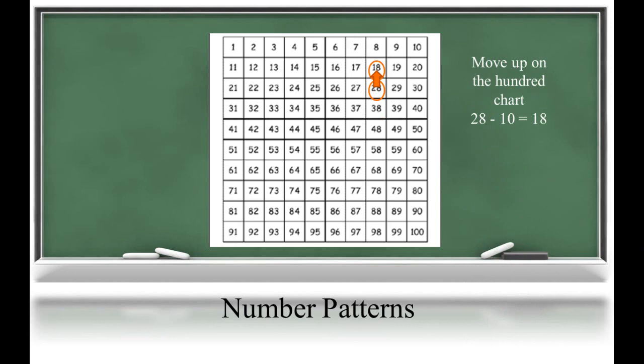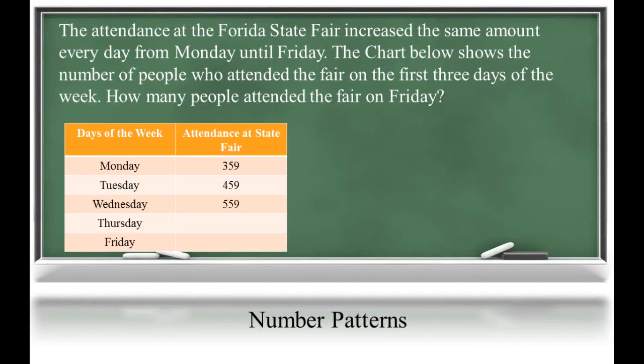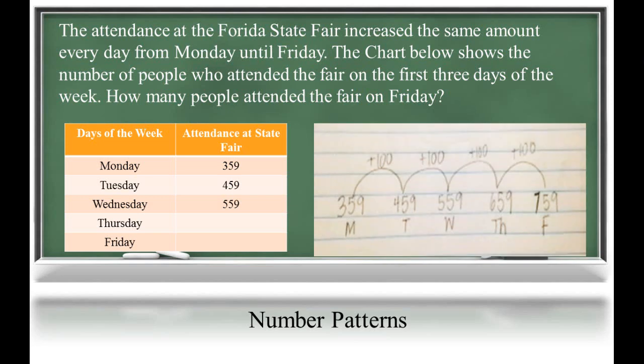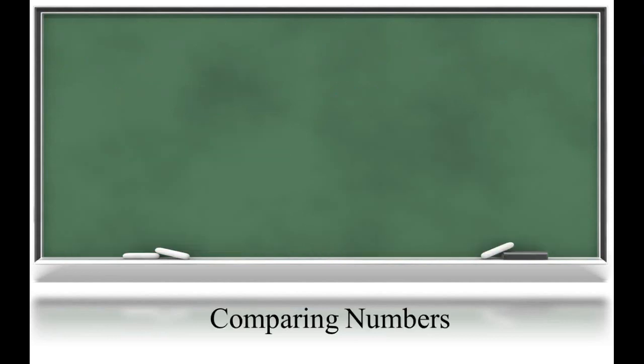Students may face problem-solving tasks like this. The attendance at the state fair increased the same amount every day from Monday until Friday. The chart below shows the number of people who attended the fair on the first three days of the week. How many people attended the fair on Friday? The student's work shown here chose to solve this problem by creating an open number line. Notice the attendance increased each day by 100. Extending the pattern, the student learns that 759 people attended on Friday.